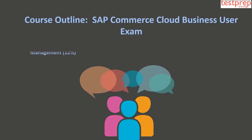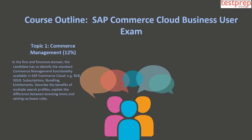Topic 1: Commerce Management, which comprises 12% weightage in the exam. In this domain, the candidate has to identify the standard commerce management functionality available in SAP Commerce Cloud — for example, B2B, Solr, subscriptions, bundling, and entitlements — and describe the benefits of multiple search profiles.